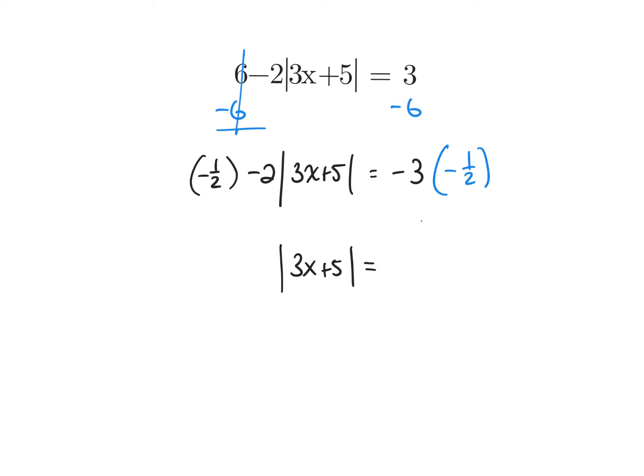So my answer is going to be positive. What's 3 times one-half? 1.5. You can use 1.5 because it's an exact decimal, or you could leave it as a fraction — 3 halves. Unfortunately, now we can't just keep going. We got rid of those two things to create our cases.